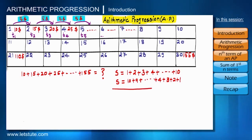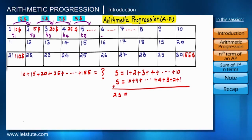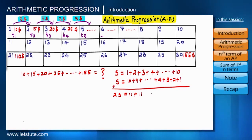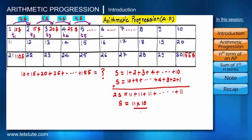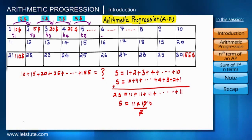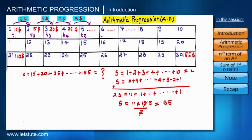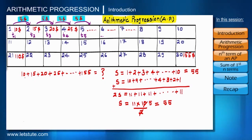Adding the two expressions: S plus S gives 2S. Then 10 plus 1 is 11, 9 plus 2 is again 11, and every pair gives 11 — so we get 11 ten times. Therefore S equals 11 times 10 divided by 2, which gives 55. We are going to apply the same logic to find the addition of all 30 payments.